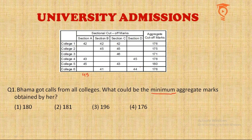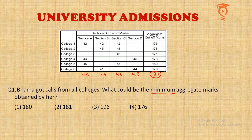In section C, as per College 3's requirement, she needs a score of 46. In section D, she should get 45. If she manages these scores, she will definitely get calls from all colleges. Adding these up: 45 + 45 + 46 + 45 = 181. This aggregate is also sufficient for all colleges. So the answer is 181. If you are not clear, take a pause, think about it, and only move ahead when you are 100 percent confident.